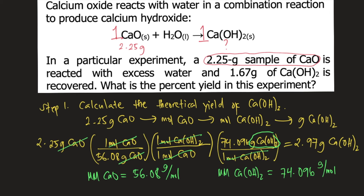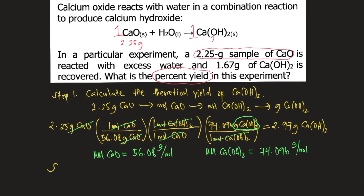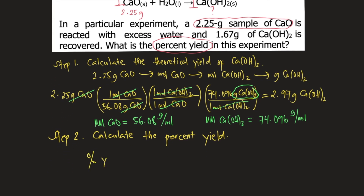The question is asking for what is the percent yield in this experiment. Step 2 is to calculate the percent yield. The formula for percent yield is equal to actual yield divided by theoretical yield, times 100.